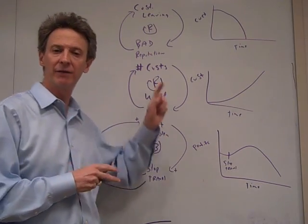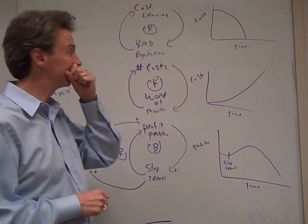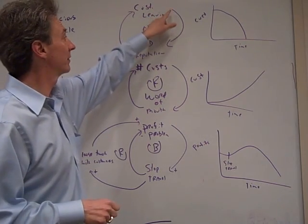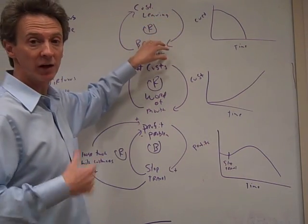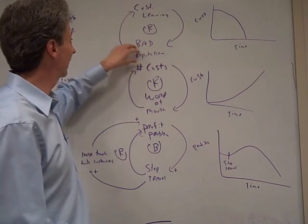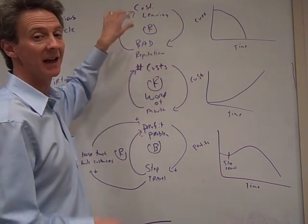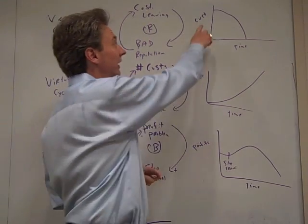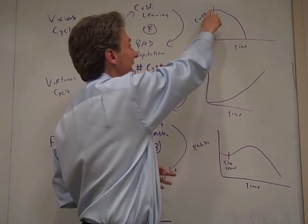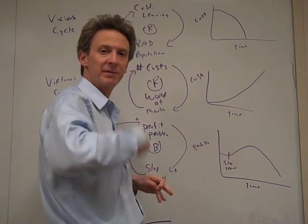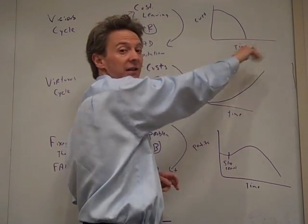So far in the videos we have covered a few system archetypes. First is vicious cycles. An example being like customers leaving, more customers leaving giving you a bad reputation, encouraging even more customers to leave. So, reinforcing kind of negative feedback loop. And you can picture what would happen graphically as your number of customers would start to decrease, but then that really picks up steam as your reputation gets worse and it kind of crashes.